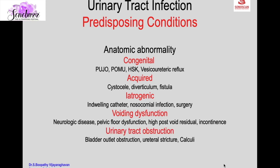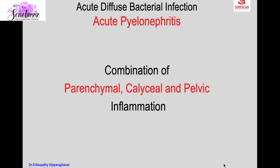Urinary tract obstruction is also a predisposing condition, including bladder outlet obstruction, ureteric stricture, or calculi. Rarely, other causes include pregnancy, urolithiasis, diabetes, and other immunosuppressive states.